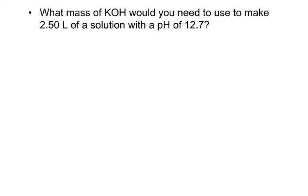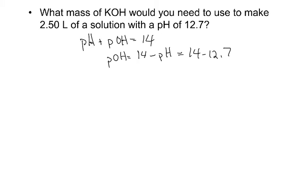So we want to get this pH into the hydroxide ion concentration. So I think the easiest way to do that is to start with pH plus pOH is equal to 14. So pOH is going to be 14 minus pH, or 14 minus 12.7. So my pOH comes out to be 1.3.